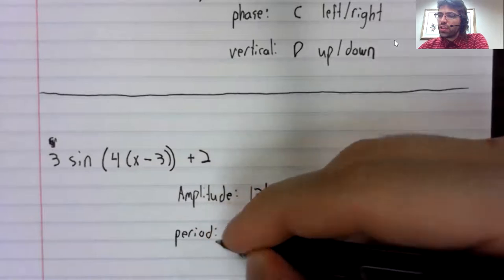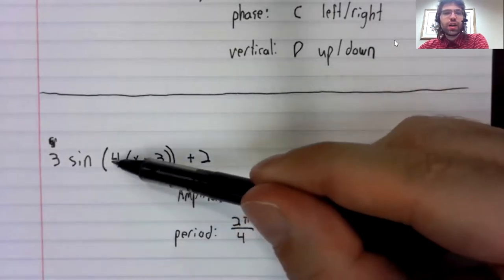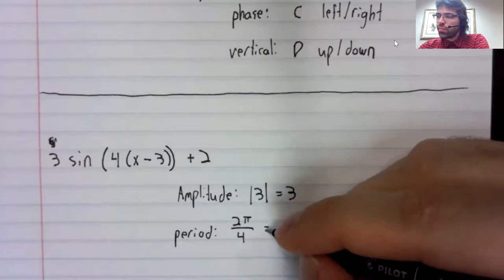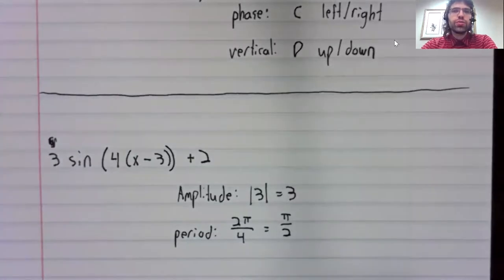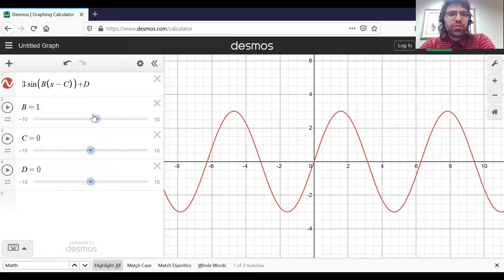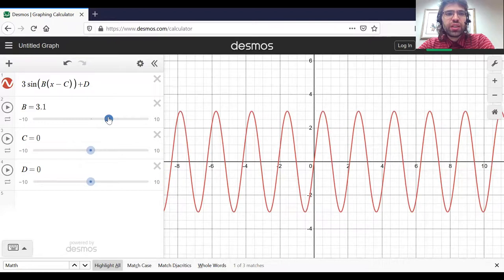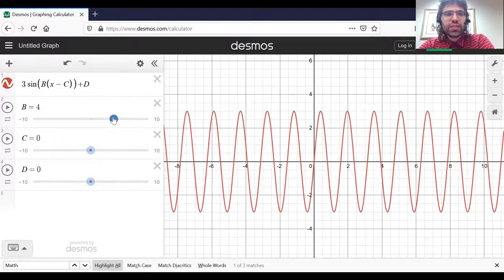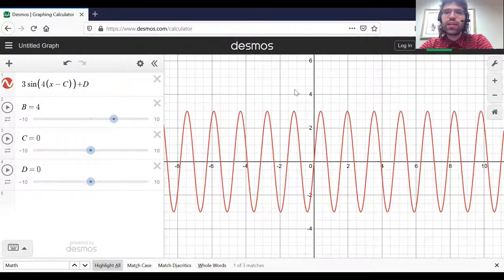The period is two pi divided by four, so pi divided by two. If we go over to Desmos, B is currently one, the period is two pi. As B increases, the period shrinks until B is four, and the period is pi divided by two.